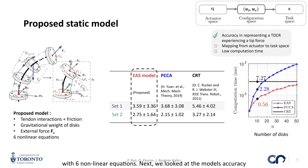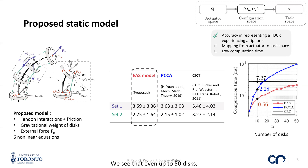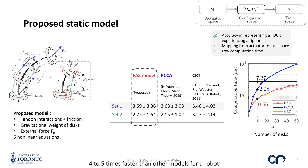We looked at the model's accuracy compared to two common models in literature and found that its performance is comparable. We also studied the evolution of its computation time with increasing number of disks. We see that even with up to 50 disks, it requires a lower computation time and is about four to five times faster than other models for a robot with 10 disks.